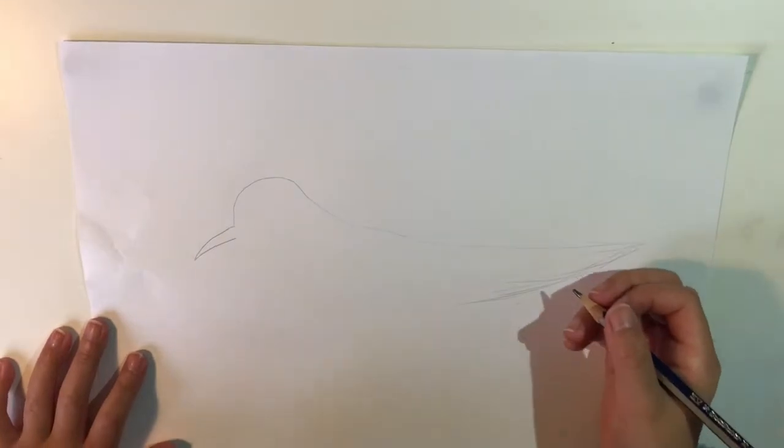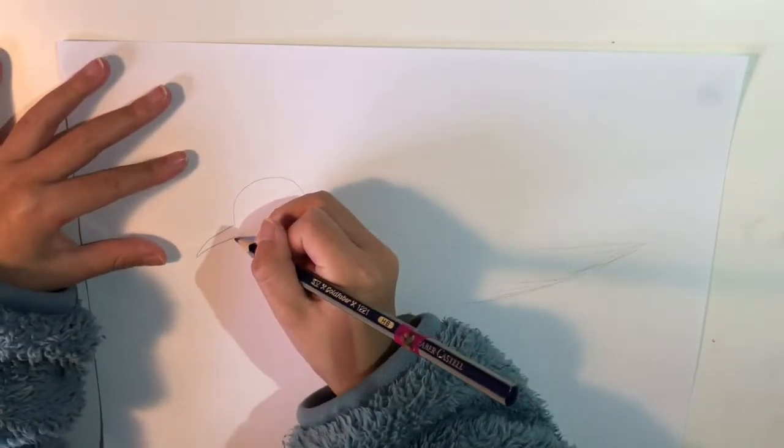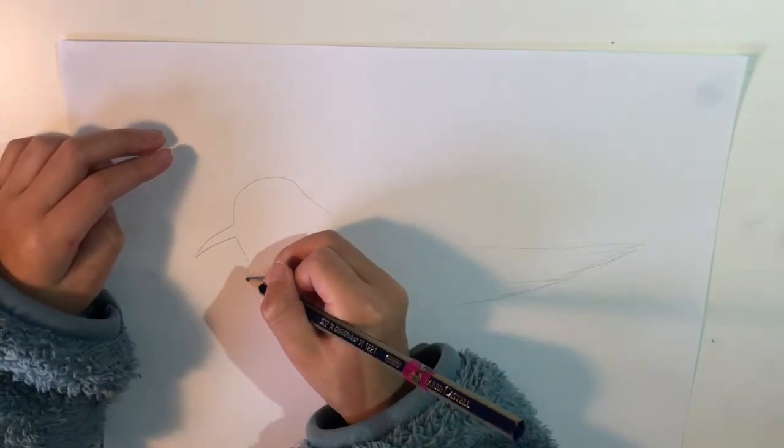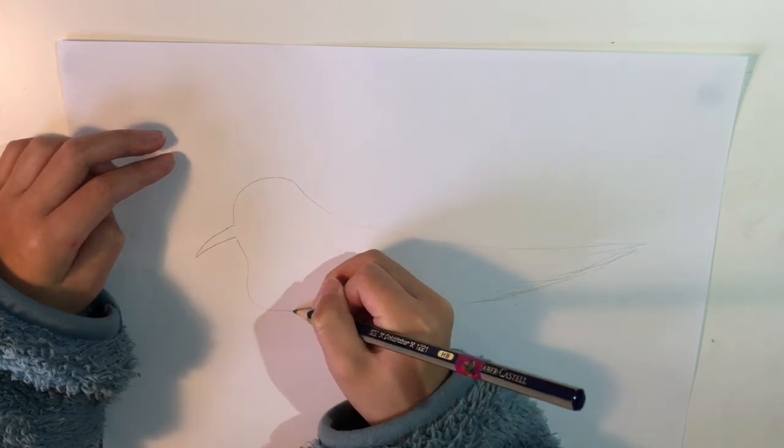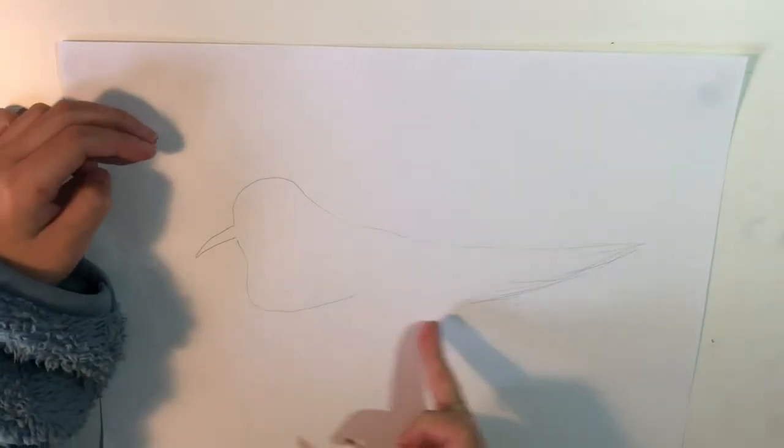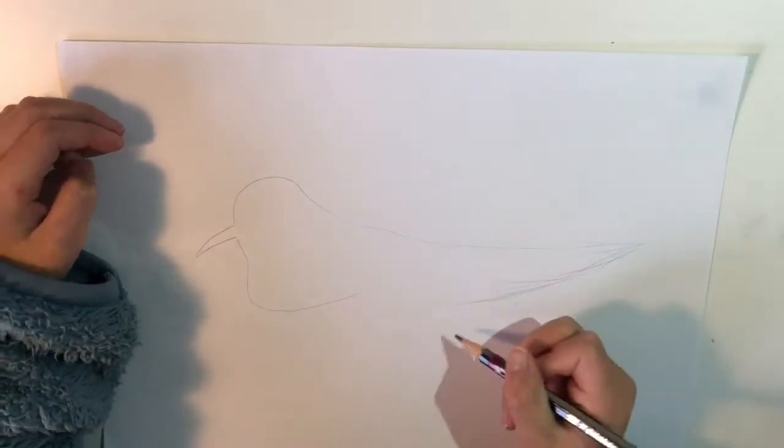Now we'll be drawing its tummy. So from the beak underneath, push it down and draw a large tummy and curve it up. Now this is kind of diagonal to the same place as this one.